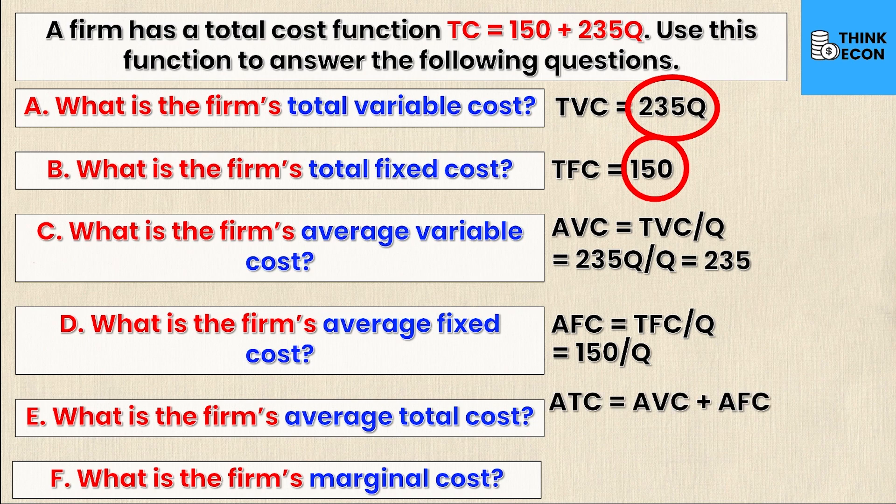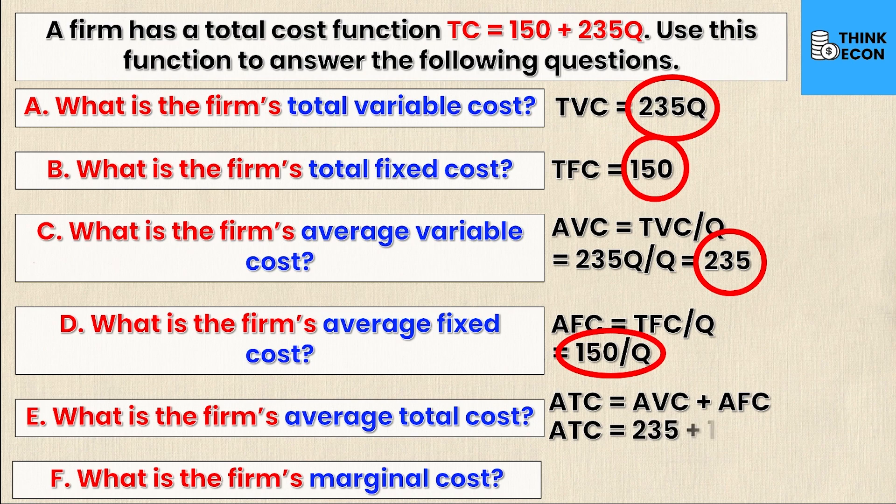What about the average total cost? Well, we know that average total cost is just the sum of average fixed cost and average variable cost. So if we add these up, we have our average variable cost here and we have our average fixed cost here. If we add these together, we'll get an equation that looks like this: average total cost is equal to 235 plus 150 over Q. And once again, that's just the sum of average variable and average fixed cost.